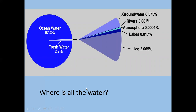This pie chart shows the distribution — the big slice, like Pac-Man, is ocean water, and it's just that tiny sliver that's freshwater. Looking at how freshwater is divided: ice is 2%, groundwater is approximately 0.6%, rivers are 0.001%, lakes are 0.017%, and the atmosphere is 0.0001%.